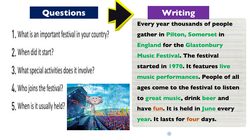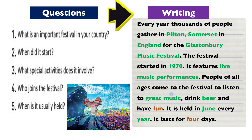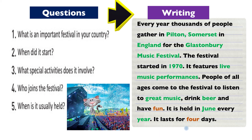Yonghee's example: every year thousands of people gather in Busan, South Korea for the Busan International Film Festival. The festival started in 1997. It features lots of feature films from around the world. People of all ages come to watch great movies, drink soju, and have fun. It is held in October every year and lasts for 14 days.